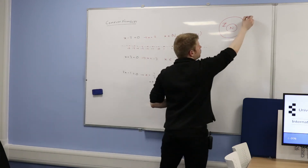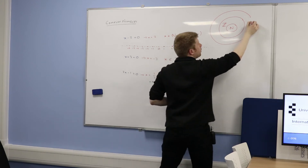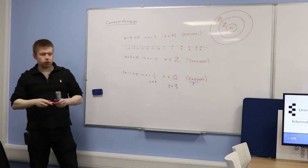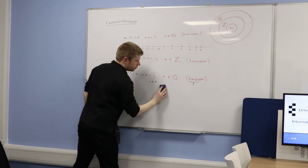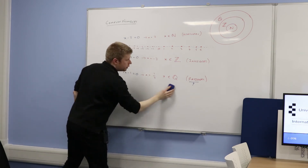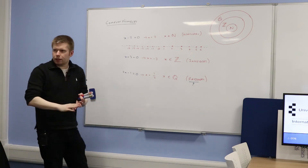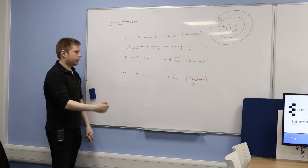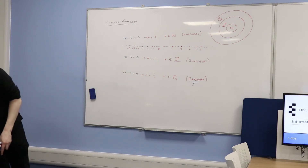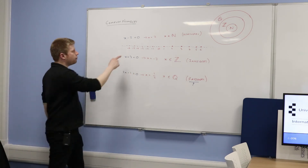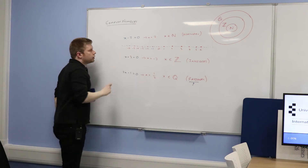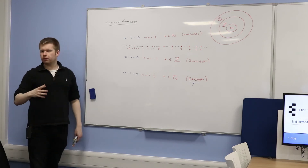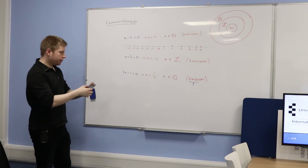So all of these numbers — the natural numbers and the integers — are also rational because they can be written as a ratio of two other numbers. The rational numbers include all of the numbers that have already come. We're starting to fill in more and more of this number line. But have we got every single possible type of number yet?